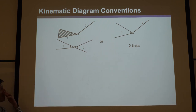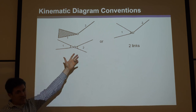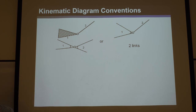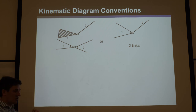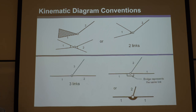Another way to tell how many links there are is by numbered labels. If there are just two numbers listed, there are just two links. By convention, number one is the link that's grounded or held fixed, and two is usually the input link. If they aren't numbered, you can still determine link count using the hatching and curve conventions just taught.